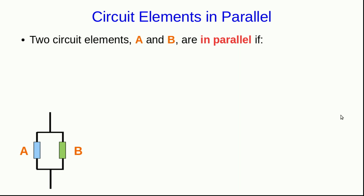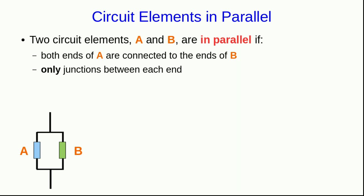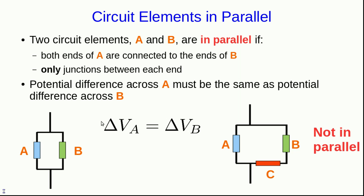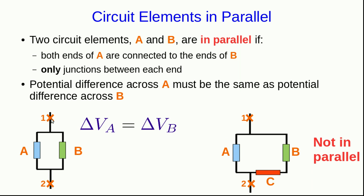On the other hand, we say circuit elements are in parallel if both ends are connected, and if there are only junctions between the ends. So this pair A and B is in parallel, but this pair is not, because between these ends of them there's this other circuit element, C. And note that the potential difference across one must be the same as the potential difference across the other if they're in parallel. Why? Well, it's because of path independence. Carrying a probe charge from one to two, but either through A or through B, the electrostatic work is the same, and so the potential difference is the same.